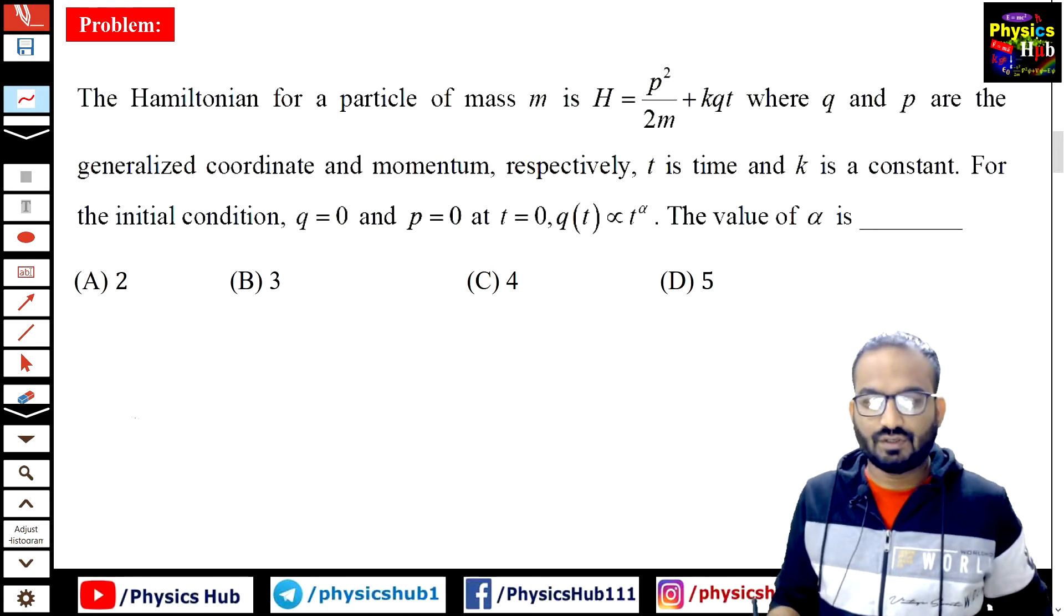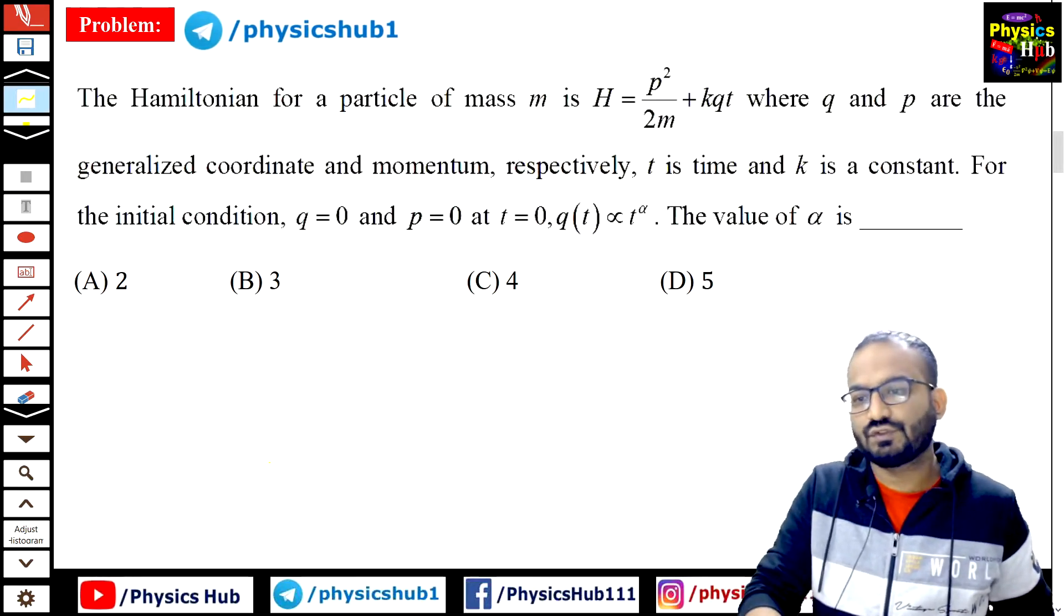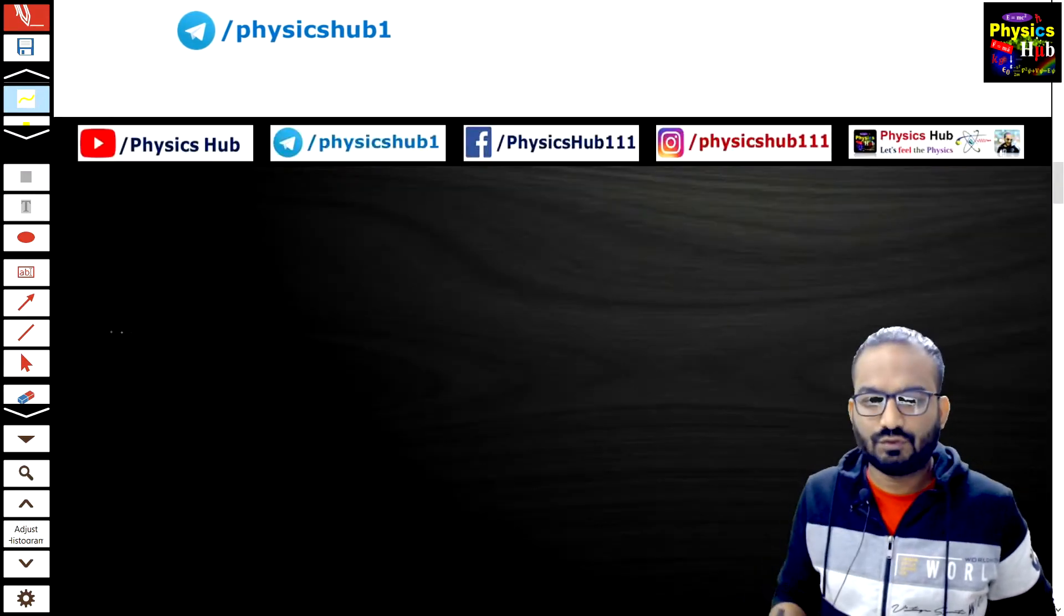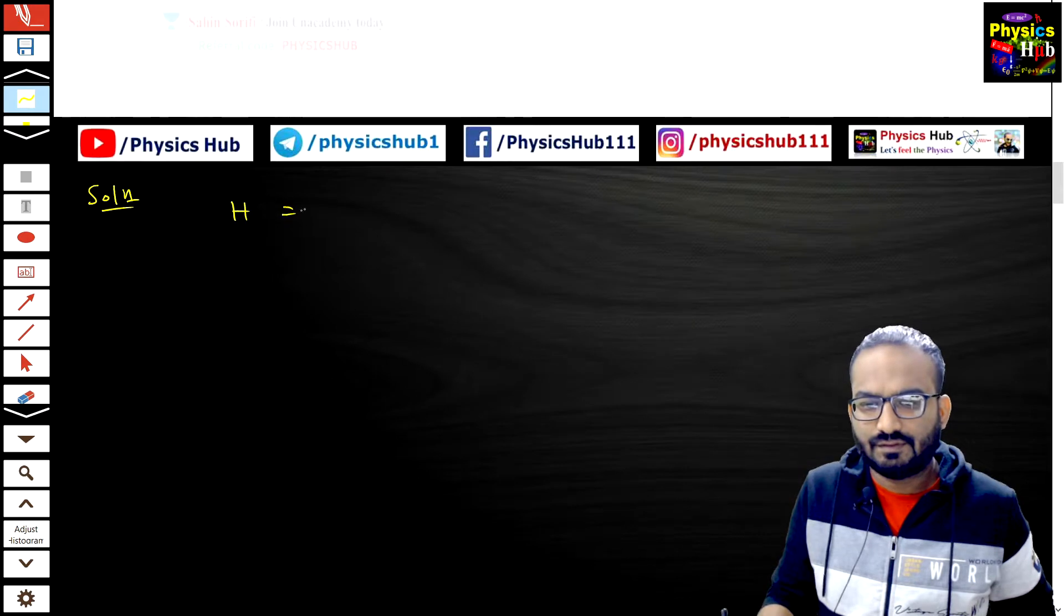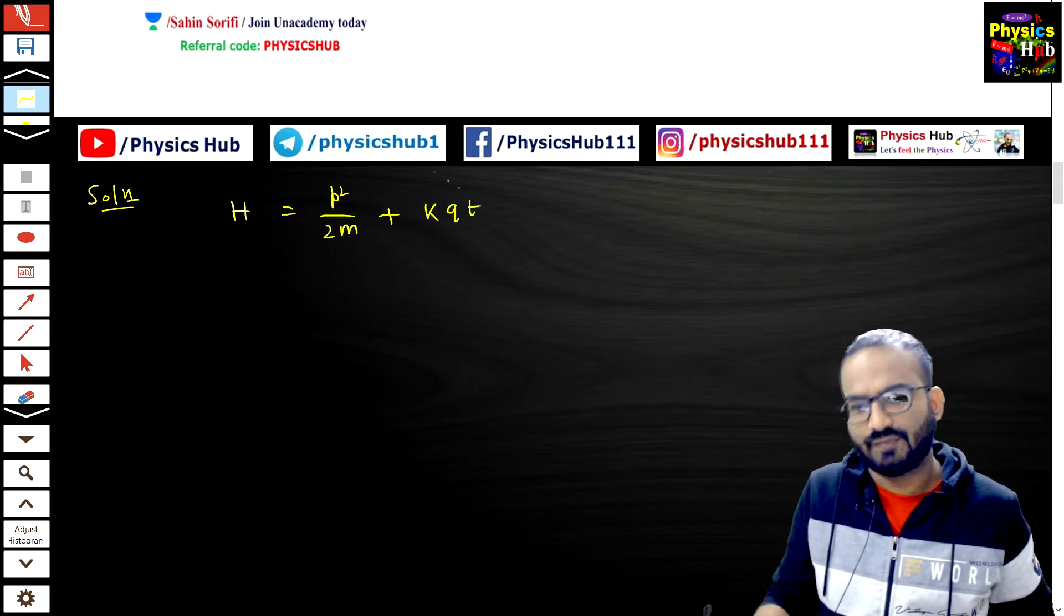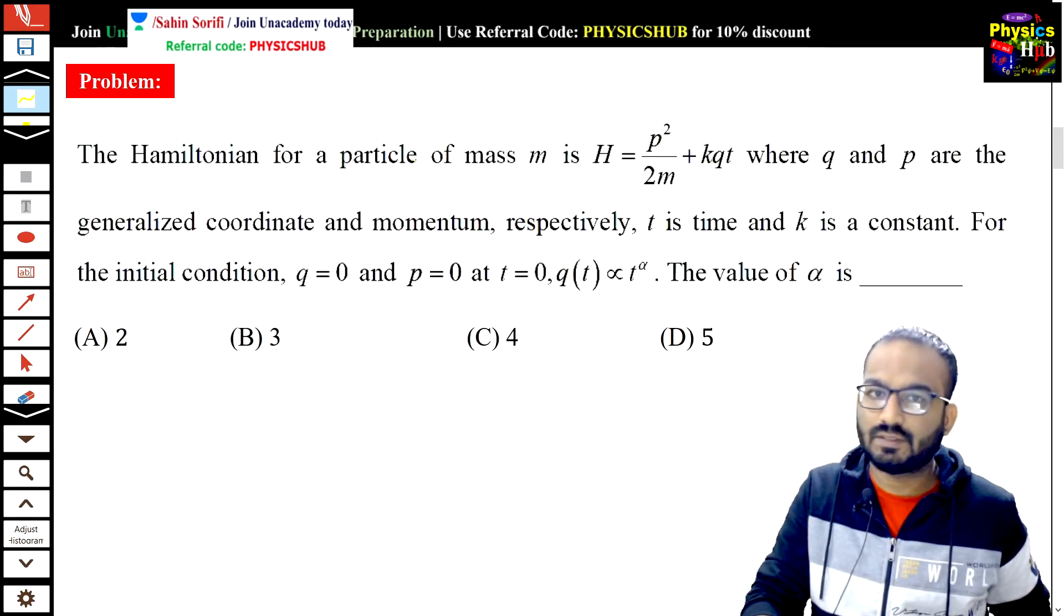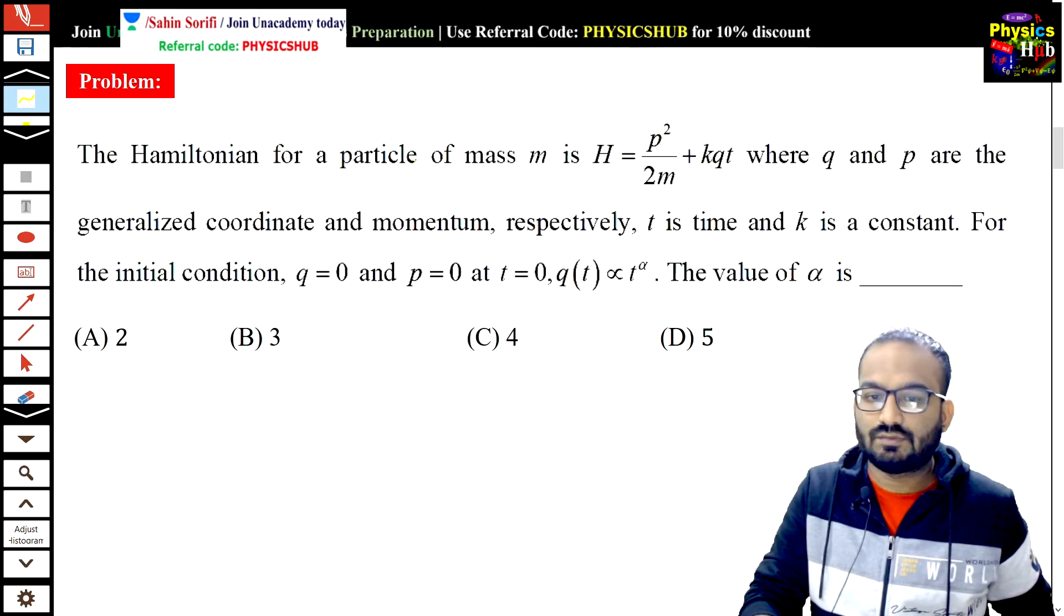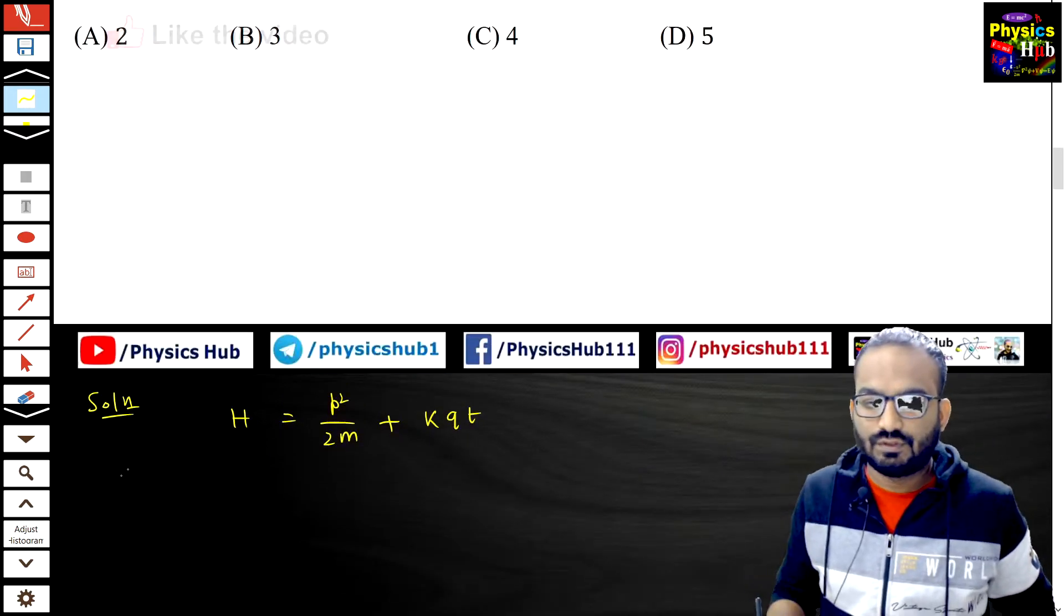So this is a very good question. How can you solve this particular problem? Your Hamiltonian value is given: H equals p square upon 2m plus k into q into t. This is given in the question. q and p are the generalized coordinate and momentum as you know.